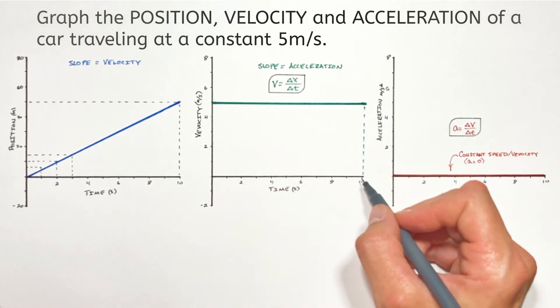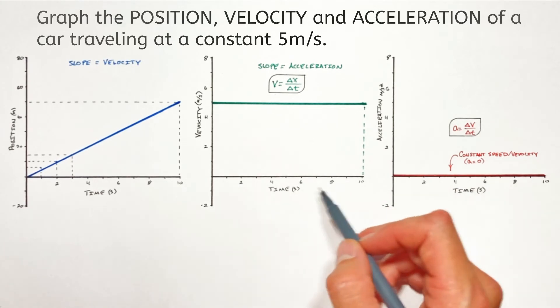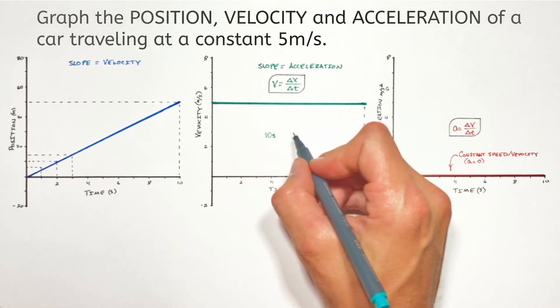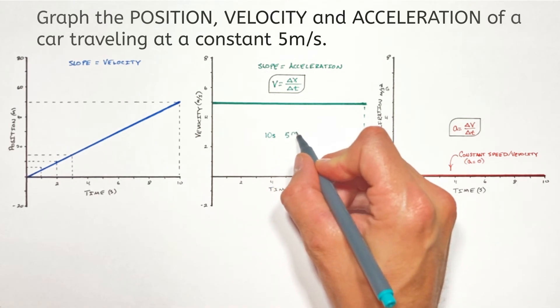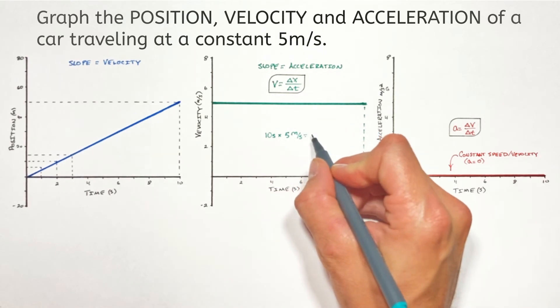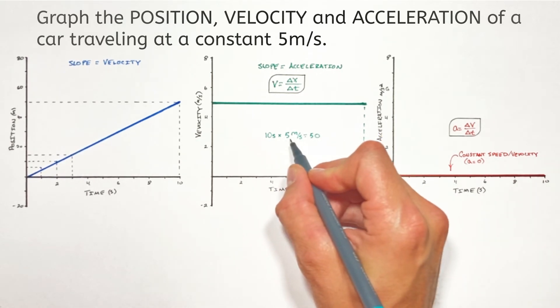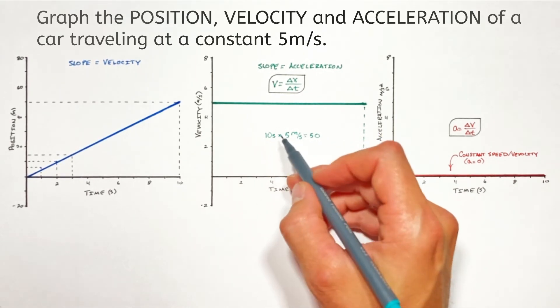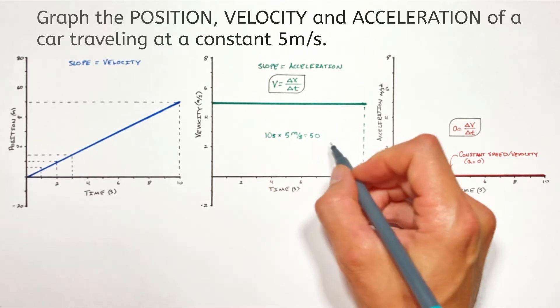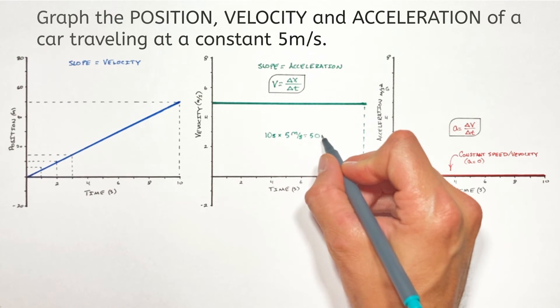If we look at the base of the rectangle, it's 10 seconds wide. And if we look at the height of the rectangle, it's five meters per second tall. So multiplying those two together, we get 10 times 50. And the important part is the units. If we multiply seconds by meters per second, you'll notice the seconds cancel out and we're left with 50 meters.